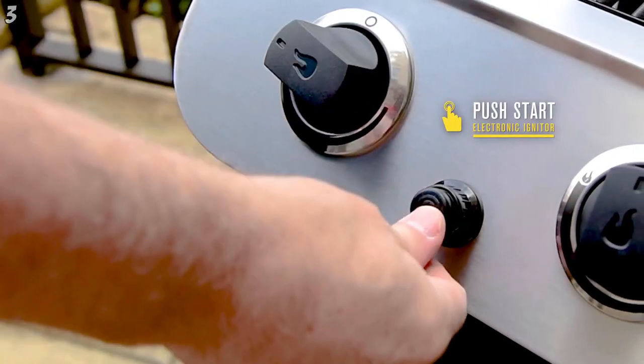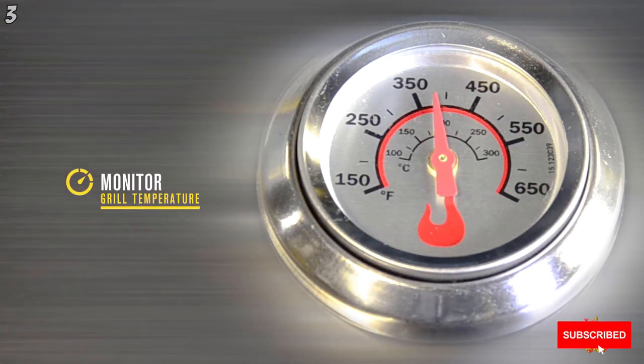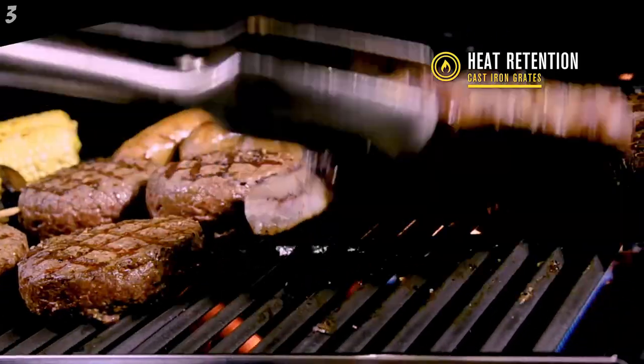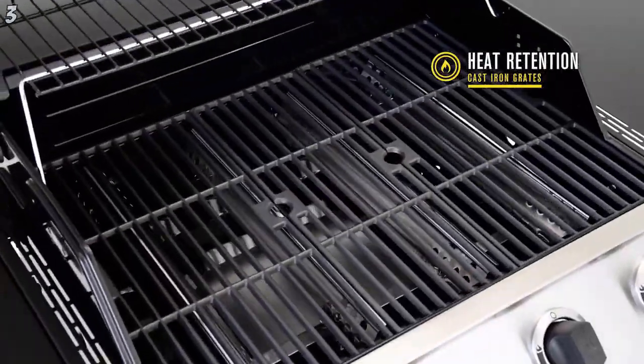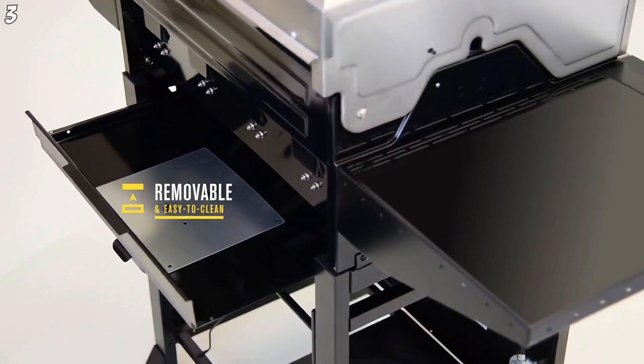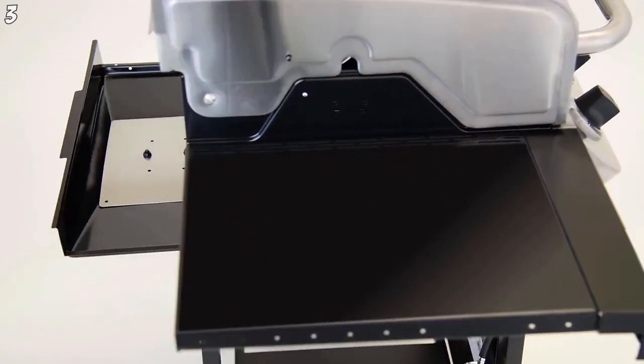Simply push the electronic ignition to light your burners. Keep track of the preheat status and monitor the inside temperature of your grill. Porcelain coated cast iron grates ensure heat retention are rust resistant and easy to clean. The removable porcelain coated grease pan is easy to clean and resists wear and tear.